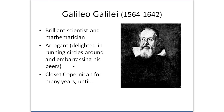He was arrogant. He liked to embarrass his peers — get an audience together and just shut down the arguments of his peers on anything, really. He just wanted to show that he was superior. He liked the Copernican model, but he was quiet about it for a long time because there was a taboo against it. He was in Italy, where the Roman Catholic Church had its base, and they were very much against the Copernican model, so it was best for him to keep quiet.